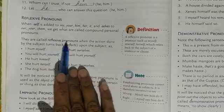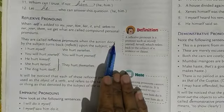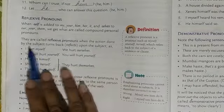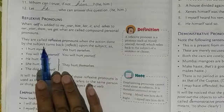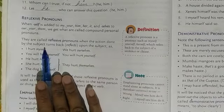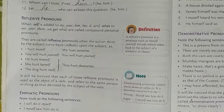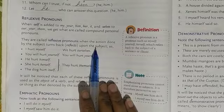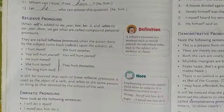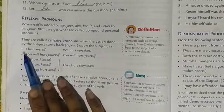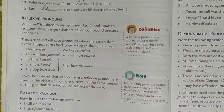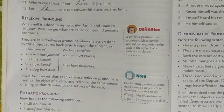They are called reflexive pronouns when any action done by the subject turns back — the subject being the one who is doing the action. It reflects back upon the subject, so it is called reflexive pronoun. For example: 'I hurt myself' — myself means the action has come back to me, mujhe hi chot lag gayi.